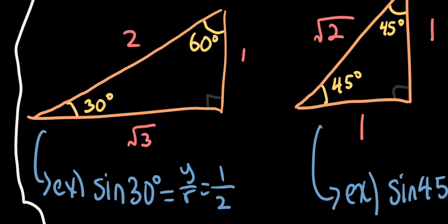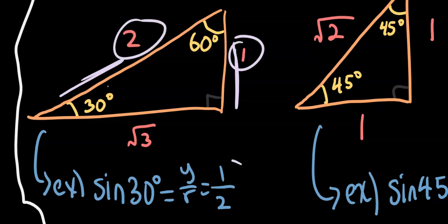If we wanted to find sine of 30 degrees, which is the same as sine of pi over 6, we go to the 30 degree angle, then find the opposite side over the hypotenuse. The hypotenuse is this one, the opposite is this one. Since sine is opposite over hypotenuse, we have 1 over 2, which equals one half.